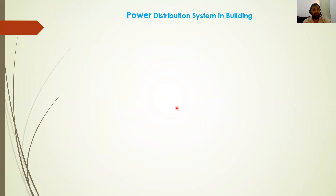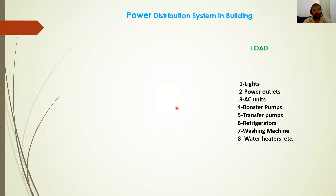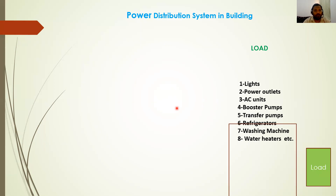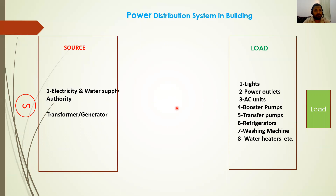Today we are concentrating on the distribution system — how power is distributed in buildings. There is a three-step process. First is the load: lights, power socket outlets, AC units, booster pumps, transfer pumps, refrigerators, washing machines, water heaters, and various pumps for domestic and industrial applications. For all these loads we need a source, which comes from transformers or generators — from electricity and water authorities or distribution companies.